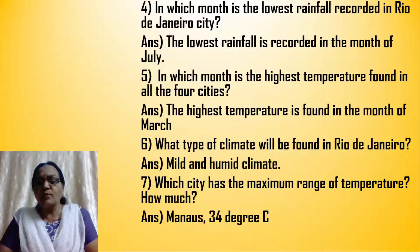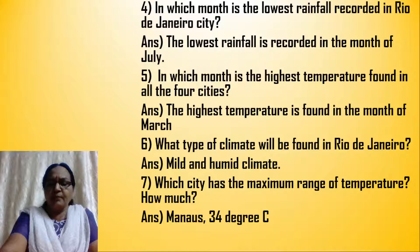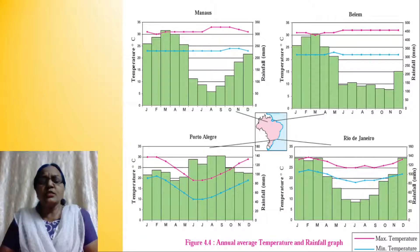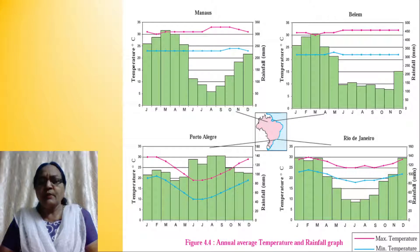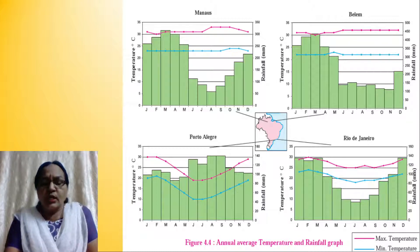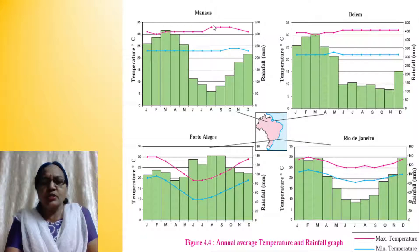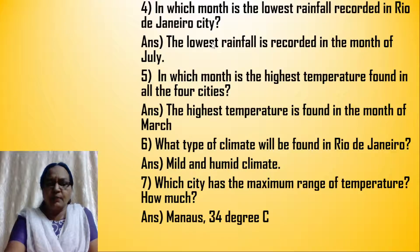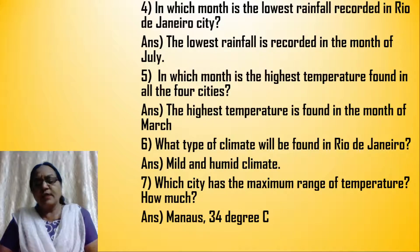Which city has the maximum range of temperature? The range in temperature is the highest temperature minus the lowest temperature. If you look at Manaus, there is a vast difference in the maximum and minimum temperatures. The maximum temperature in Manaus is about 34 degrees centigrade.